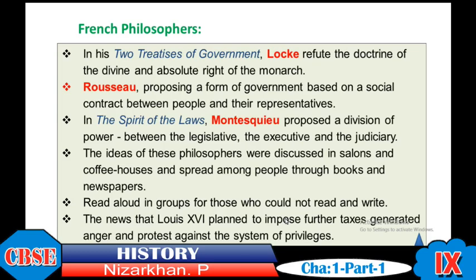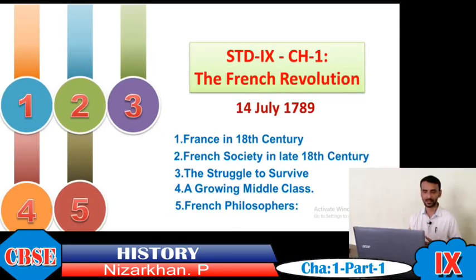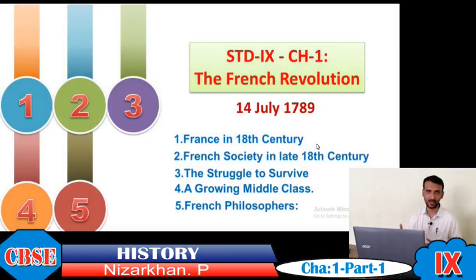This was the first part — the incidents that led to the outbreak of the French Revolution in 1789. We discussed five major factors: the condition of France in the 18th century, the condition of French society, the struggle to survive the economic crisis, the emergence of a new middle class, and the contribution of French philosophers. Thank you, and we will continue with the next part.